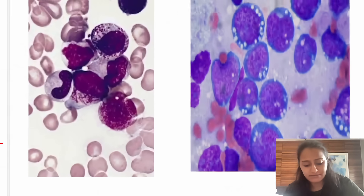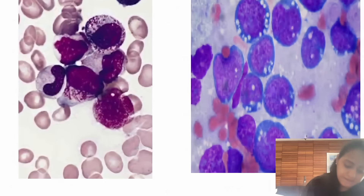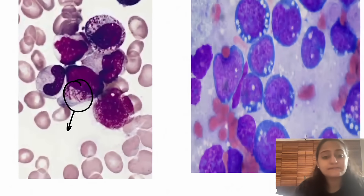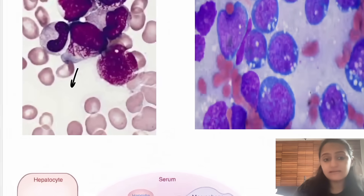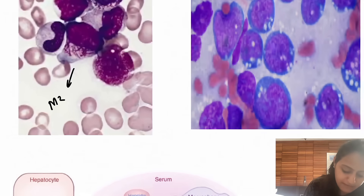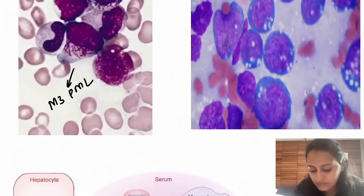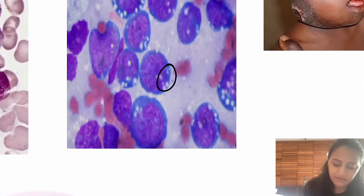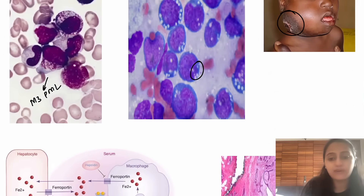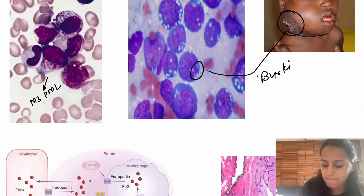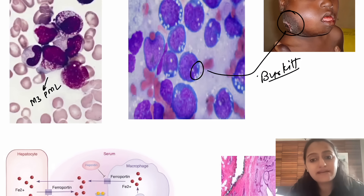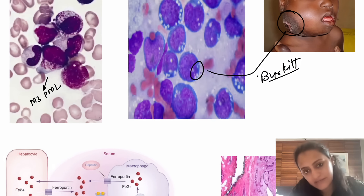Looking at important images: multiple Auer rods (faggot cells) indicate AML subtype M3 (promyelocytic leukemia / PML), associated with DIC. A jaw swelling with vacuolated cell appearance is Burkitt's lymphoma — you may see a starry sky appearance or the vacuolated appearance with jaw swelling.